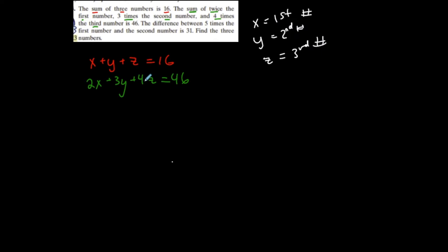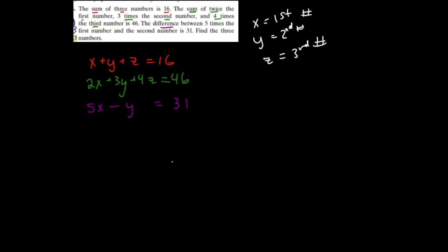The difference — difference is subtraction — between five times the first number and the second number is 31. So that last equation is 5x minus y equals 31. This last equation does not have a z in it, so I'll line it up nicely. No z for this one.